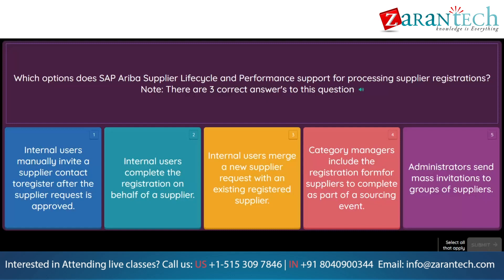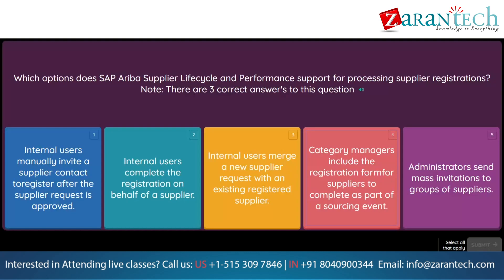Question. Which options does SAP Ariba Supplier Lifecycle and Performance support for processing supplier registrations? Note, there are three correct answers. Option 1: Internal users manually invite a supplier contact to register after the supplier request is approved. Option 2: Internal users complete the registration on behalf of a supplier. Option 3: Internal users merge a new supplier request with an existing registered supplier. Option 4: Category managers include the registration form for suppliers to complete as part of a sourcing event. Option 5: Administrators send mass invitations to groups of suppliers.